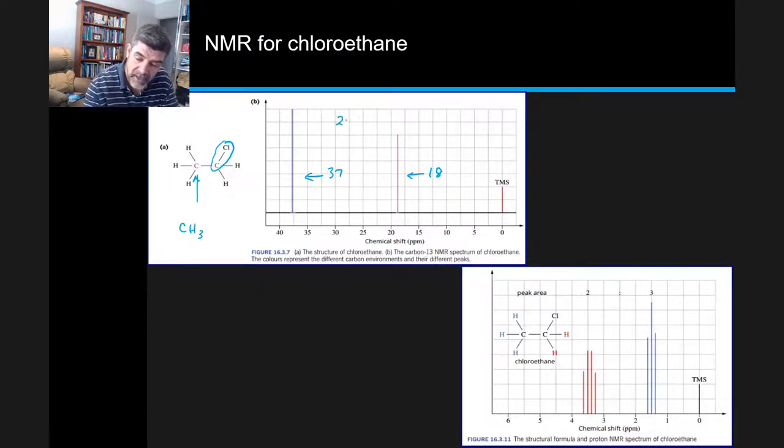Two peaks means we know that there are at least two carbons, two plus carbons, and in this case there are only the two.